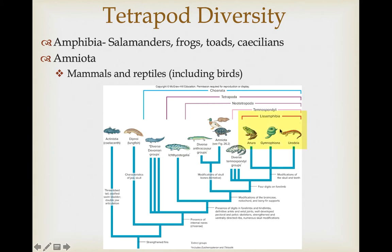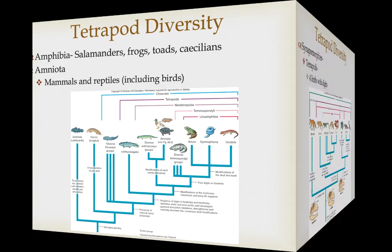This includes the salamanders, frogs, toads, and caecilians. Then we're going to talk about the remaining vertebrates, which fit under the clade the amniota. This includes the mammals and the reptiles. And reptiles, to be monophyletic, must include birds.